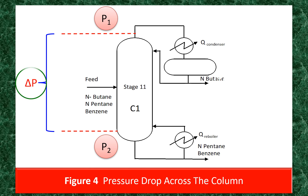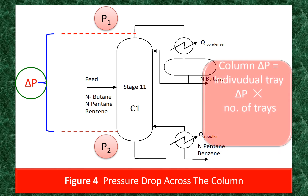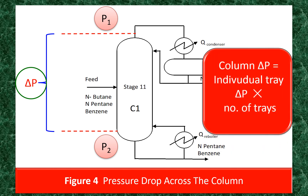It is not possible to measure the pressure drop across individual trays. That is the reason why the column total pressure drop is measured. So the column total pressure drop is the individual tray pressure drop multiplied by the number of trays.